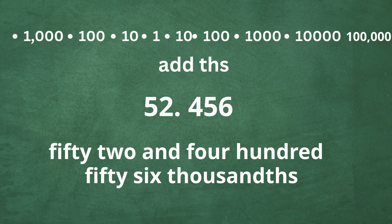And now, with the decimal, to the right of the decimal, you have tenths, hundredths, and thousandths. So it becomes fifty-two and four hundred and fifty-six thousandths.